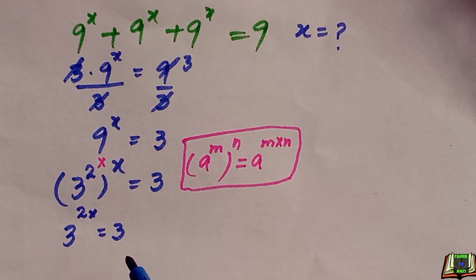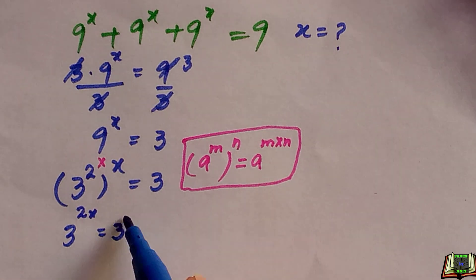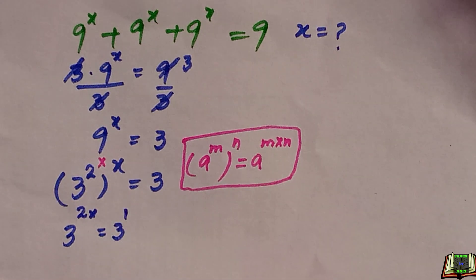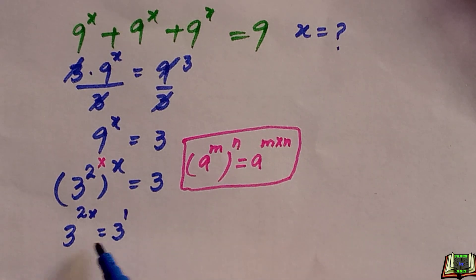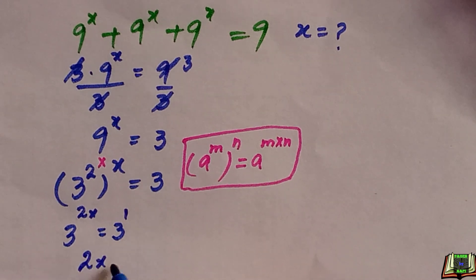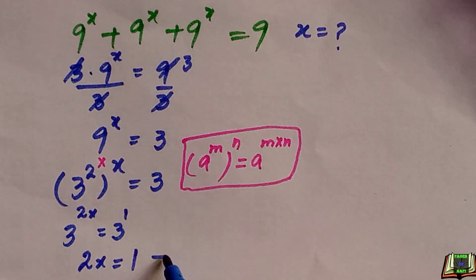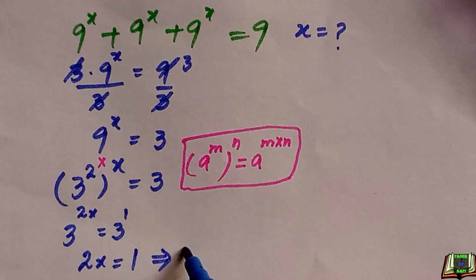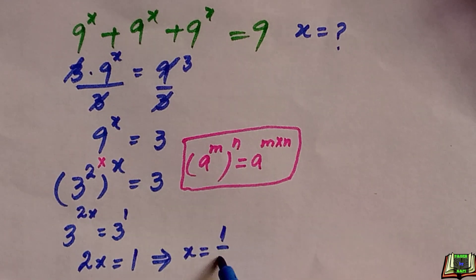This 3 on the right is basically 3 raised to power 1. Since the bases are the same, we can equate the powers. From there we have 2x is equal to 1, and x is equal to 1 over 2.